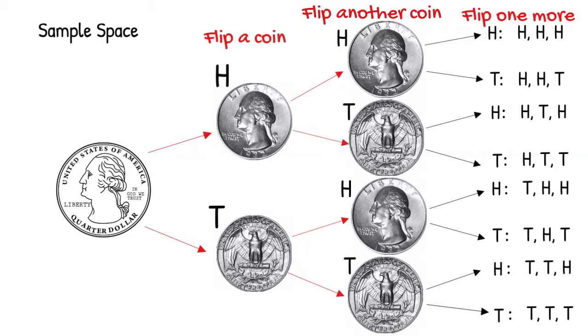Being able to see the sample space in this way will be very helpful as we dive more deeply into probability. Okay, let's say instead of a coin, we toss a pair of dice.